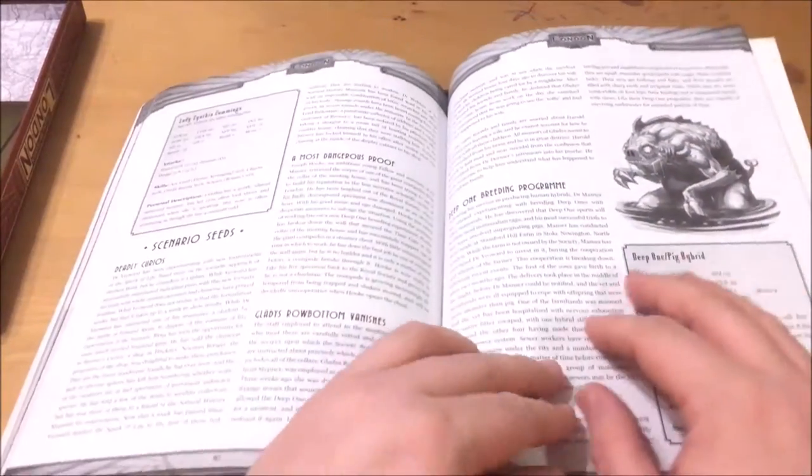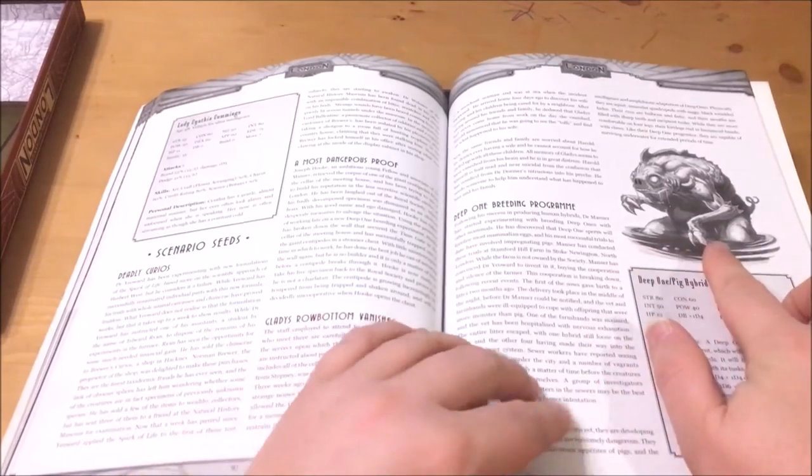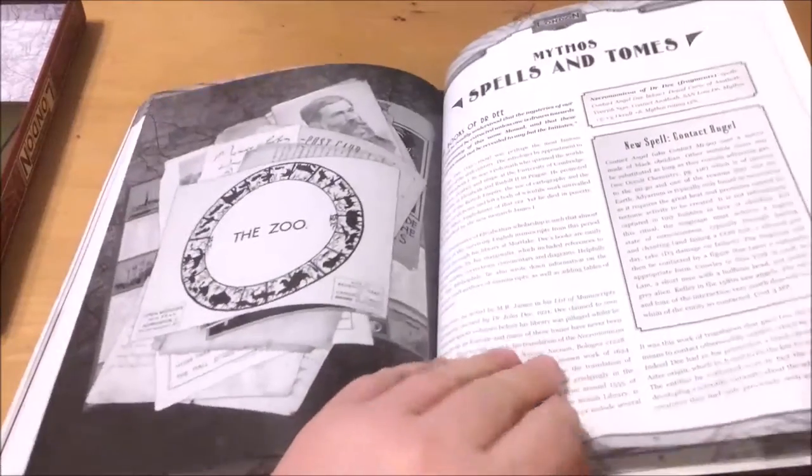We also have a collection of scenario seeds that the Society could provide including a horrific half deep one half pig hybrid. Truly the stuff of nightmares.